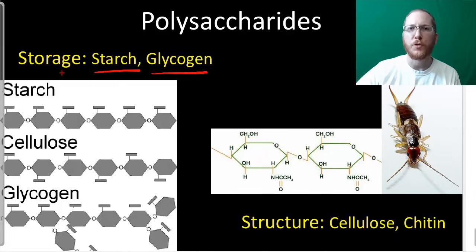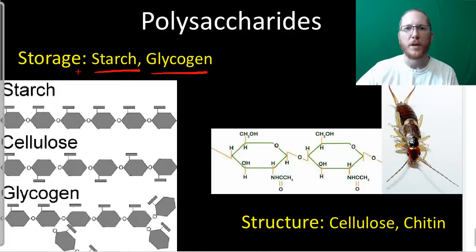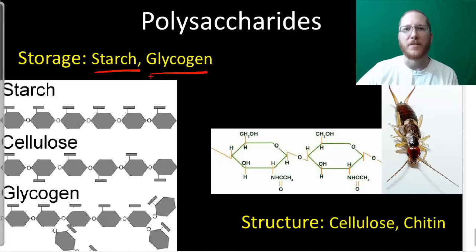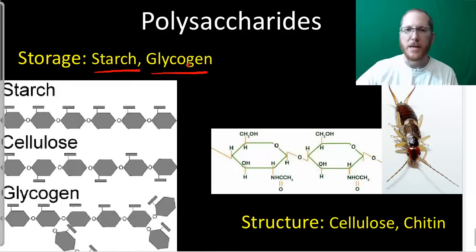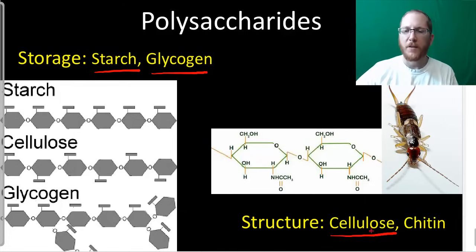Glycogen is not long-term storage — if you've been overeating and have 20 pounds to store, you'd store that as fat, not glycogen, because storing as a carbohydrate takes up a lot more space. It's more massive, which is why our body doesn't use this for long-term storage. If you eat a lot of sugar, you convert much of it to fat, not glycogen. You can also use carbohydrates for structure. Plants' cell walls have a lot of cellulose, which helps make them rigid.